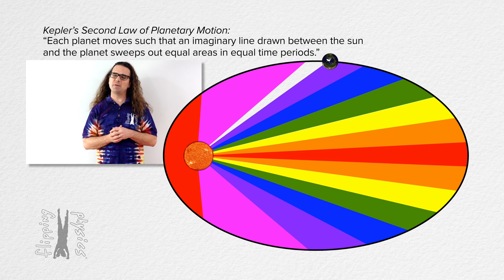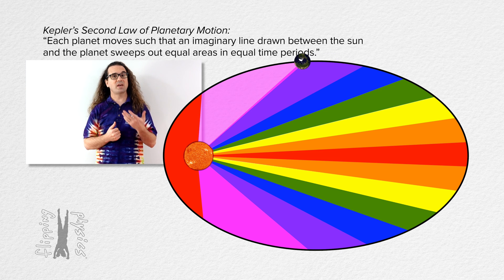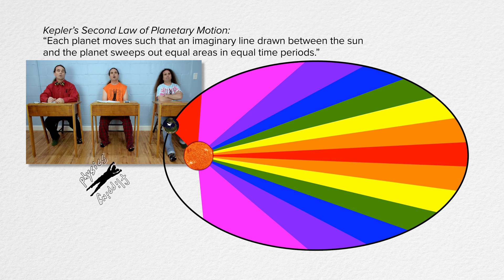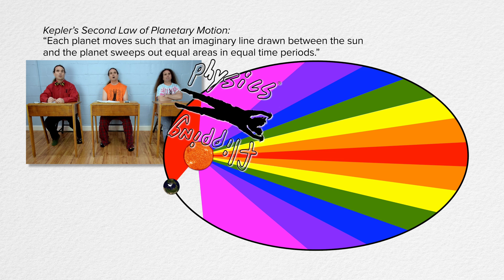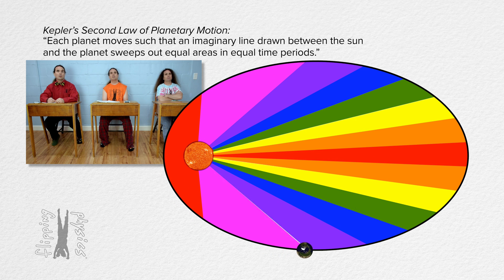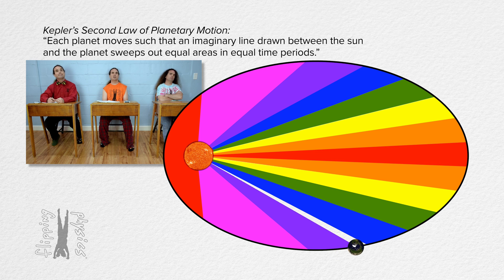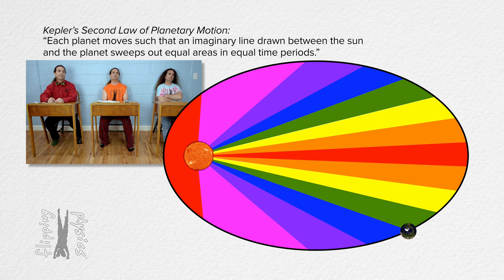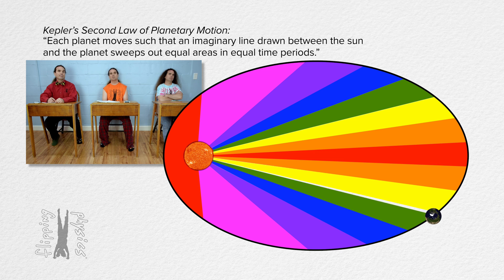Good morning. Bobby, please read Kepler's Second Law of Planetary Motion. Each planet moves such that an imaginary line drawn between the sun and the planet sweeps out equal areas in equal time periods. Thank you, Bobby.